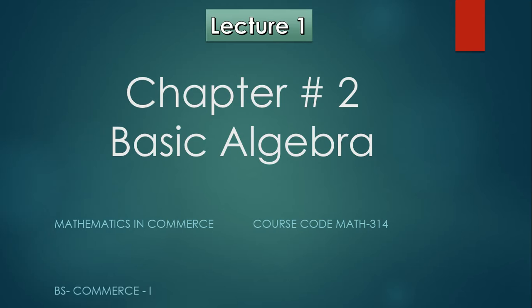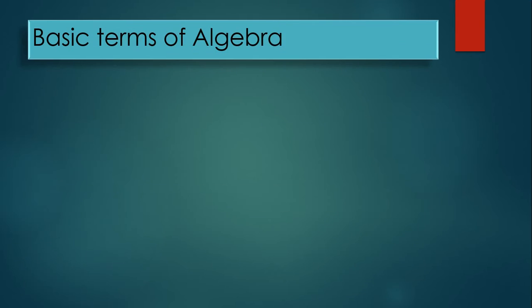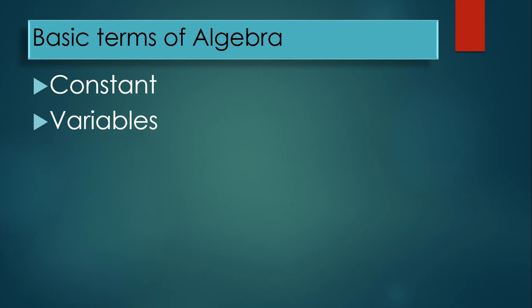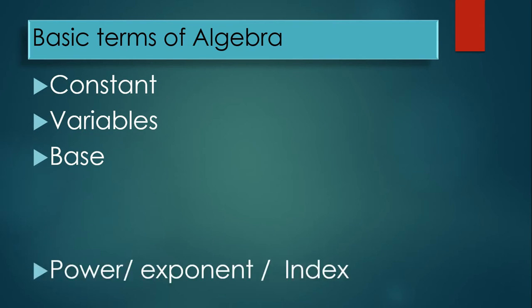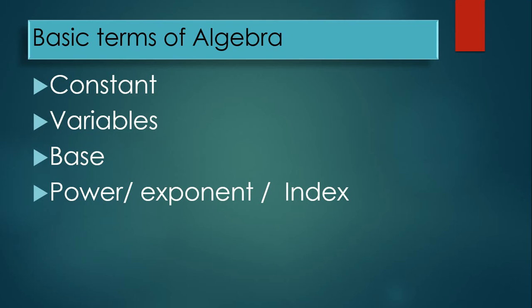This chapter is on Mathematics and Commerce — Basic Algebra. We will cover the basics of algebra. The basic terms of algebra we need to understand include: constant, variable, base, power, exponent (or index), and coefficient.